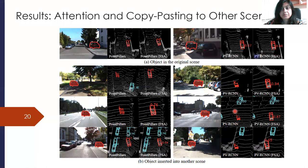We also choose some low confidence detections and place them in different scenes. This is a low confidence detection for PV-RCNN placed in different scenes. We find that in one scene it is missed by the baseline, but we pick it up with FSA. For PV-RCNN, it is missed by the baseline, but with our FSA module we can pick it up pretty robustly.